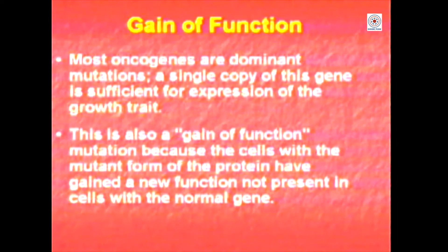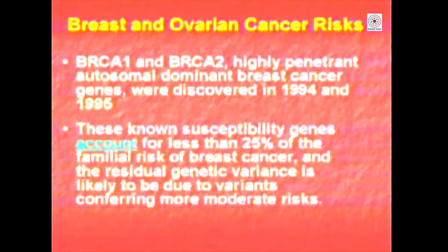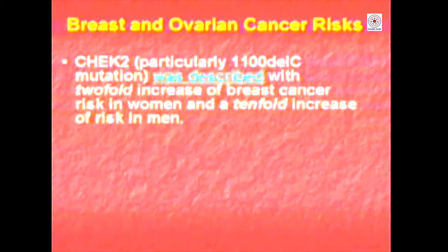Now let us look at gain of function mutations. Most oncogenes are dominant mutations — a single copy of the gene can convert a cell to a high level of growth, altering growth regulation. Many of these are actually growth factors themselves or growth factor receptors. Two genes very well worked out in breast and ovarian cancer are called BRCA1 and BRCA2, discovered in 1994 and 1995. These susceptibility genes account for about 25% of breast or ovarian cancer. There are other genes like CHEK2, and receptor tyrosine kinases at the cell surface can also give you cancer.